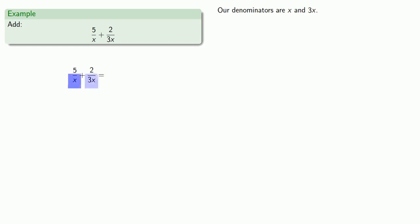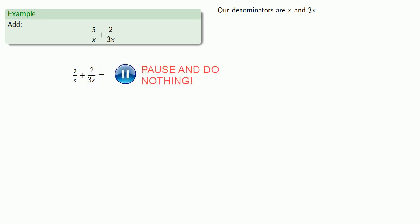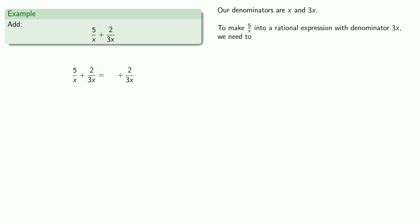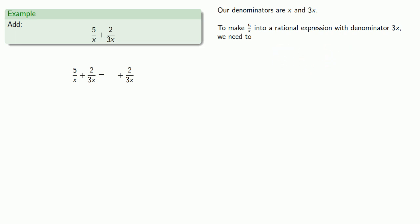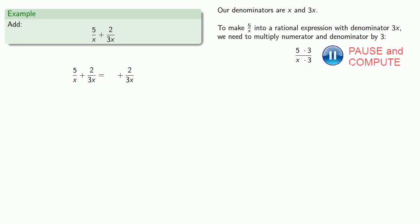So let's say we want to add 5 over x plus 2 over 3x. Our denominators are x and 3x, which means that 3x will be our common denominator. So we'll want to change both fractions into fractions with a denominator of 3x. To make 5 over x into a rational expression with denominator 3x, we need to multiply numerator and denominator by 3. And so if we do that, we get the equivalent fraction 15 over 3x.